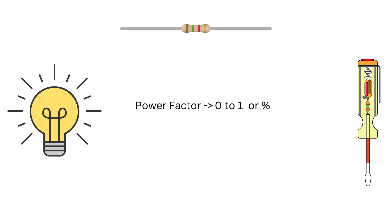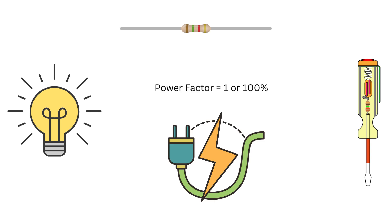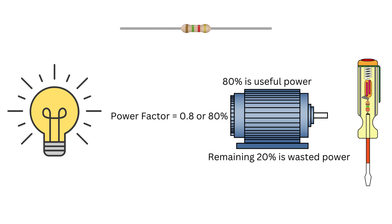Power factor is represented as a number between zero and one, or as a percentage. A power factor of one, or 100 percent, means all the power is being used efficiently.